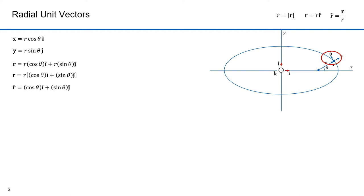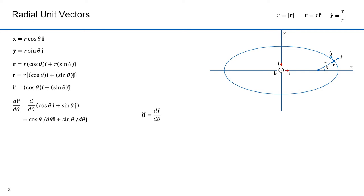I'll now introduce the unit vector θ̂ that I intend to be orthogonal to the unit vector r̂. I'll take the derivative of r̂ with respect to theta and define that to be the unit vector θ̂. It's going to be at right angles to r̂ — I'll assert that now and prove it later. The derivative of r̂ with respect to theta equals d/dθ of (cosine theta i + sine theta j). The derivative of a sum is the sum of derivatives, and since i and j are constants they're not part of the derivative. The derivative of cosine theta is minus sine theta, and the derivative of sine theta is cosine theta. This thus equals the unit vector θ̂.